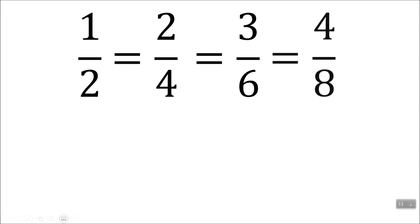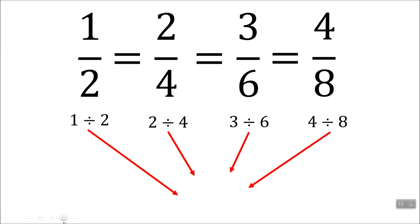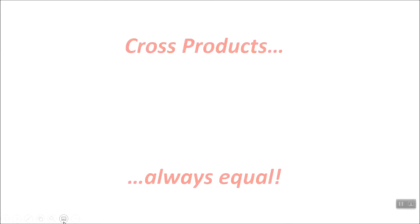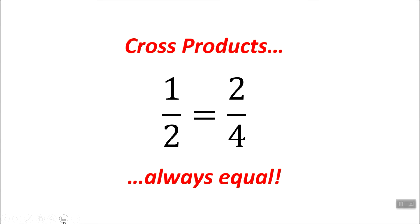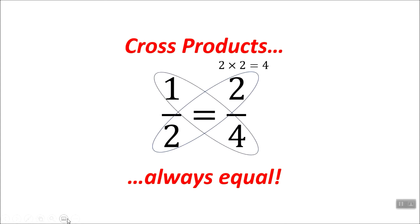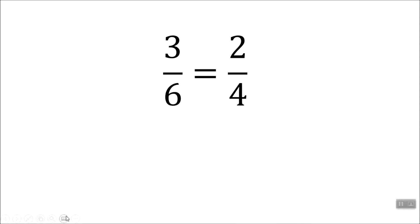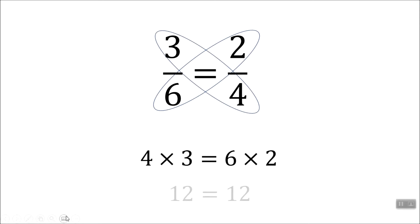There's something really cool that happens with this. The next thing I'm going to tell you about is something called the cross products. Back to that one half equals two fourths: when you multiply that denominator times the numerator, you get the same thing as when you multiply the other denominator times the other numerator. That is the cross products.